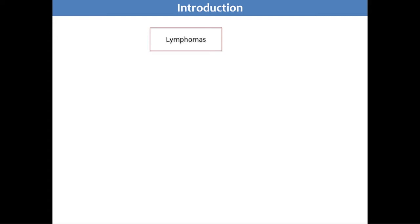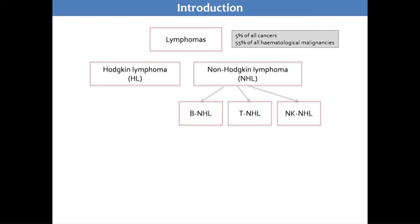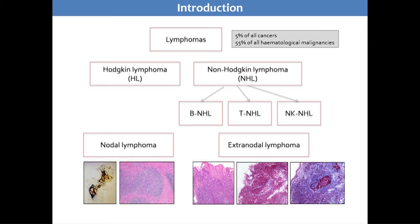Lymphomas represent 5% of all cancers and approximately half of all haematological malignancies. You can essentially divide them into Hodgkin lymphomas and non-Hodgkin lymphomas, and then you can divide the non-Hodgkin lymphomas into B, T and NK lymphomas. Anatomically, you can divide them into those occurring in the lymph nodes or those occurring extranodally, and the ones which occur in and around the eye are all extranodal lymphomas.